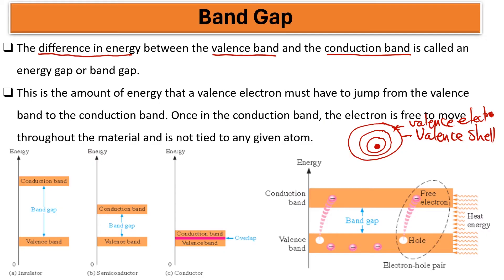Inside the atom, from the valence shell, we also have what we call the conducting band. From the valence band, we are also having the conducting band. What makes it possible for currents to be generated in the material?